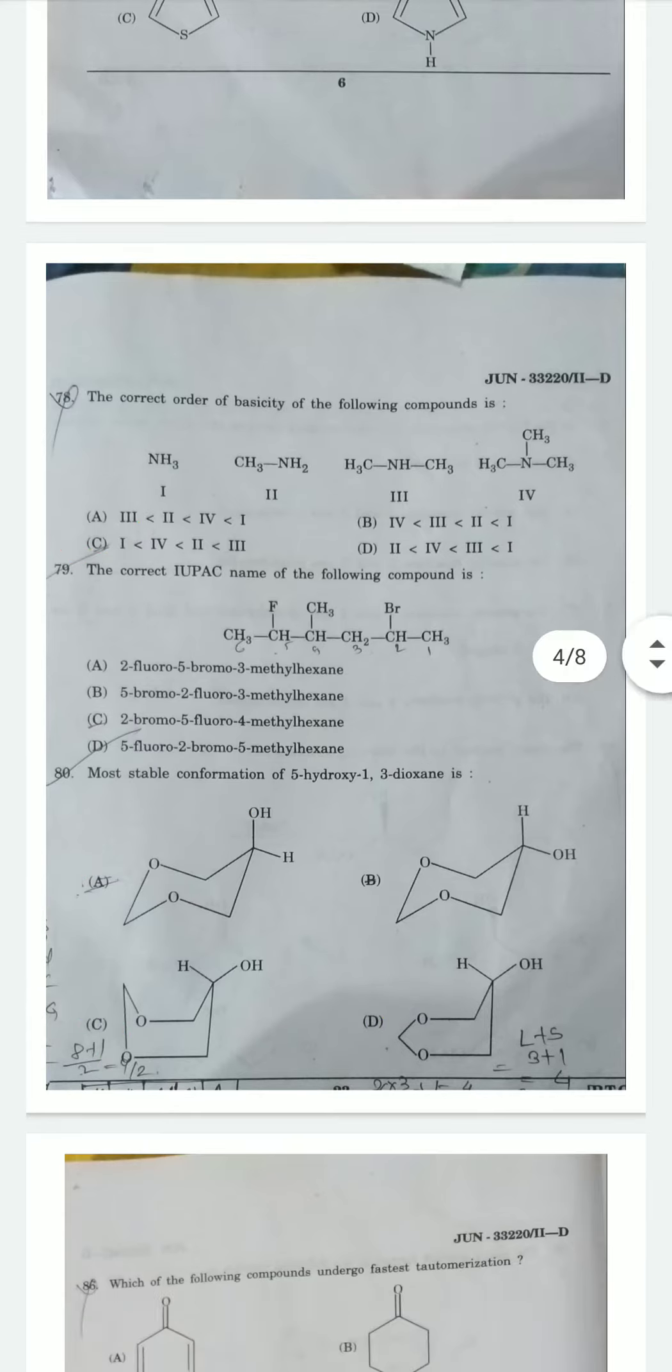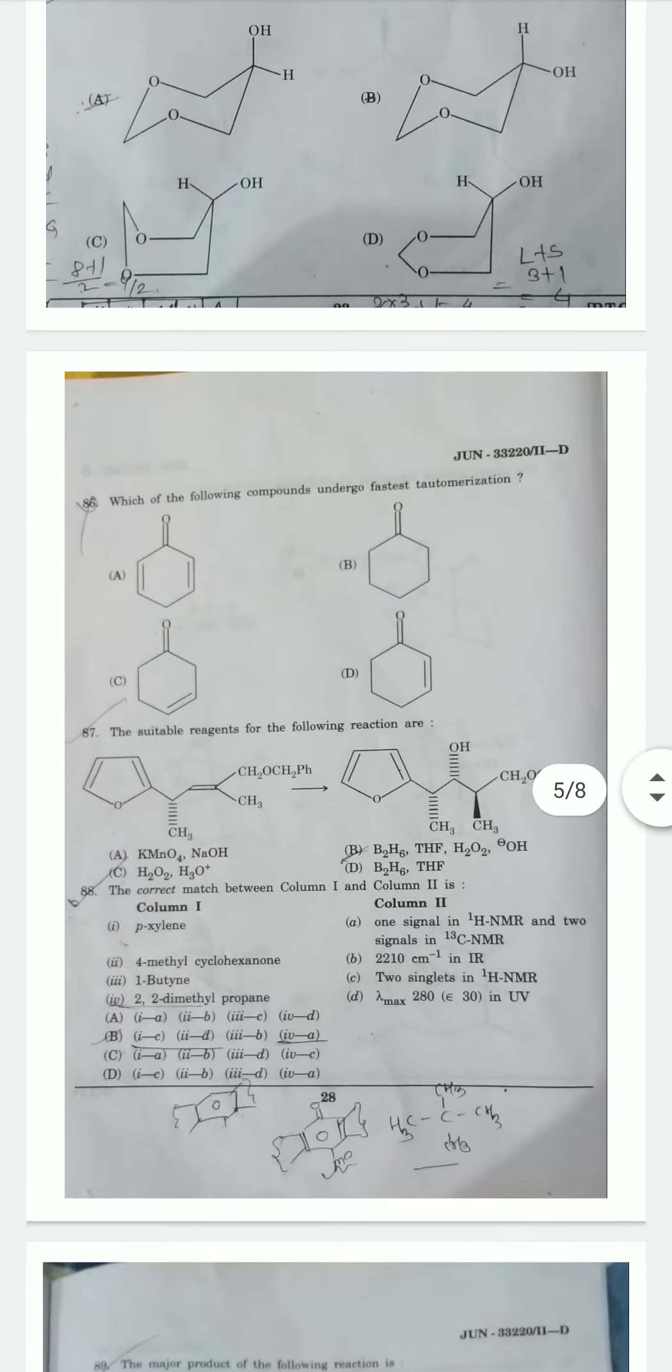Question 9: Which of the following compounds undergoes fastest tautomerization? This is a simple question. Option A is correct because conjugation participates and that makes tautomerization fastest.